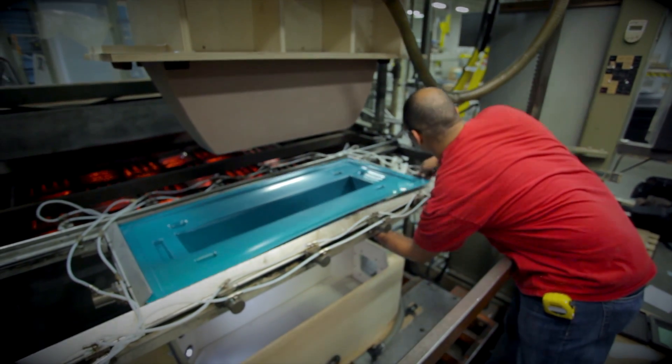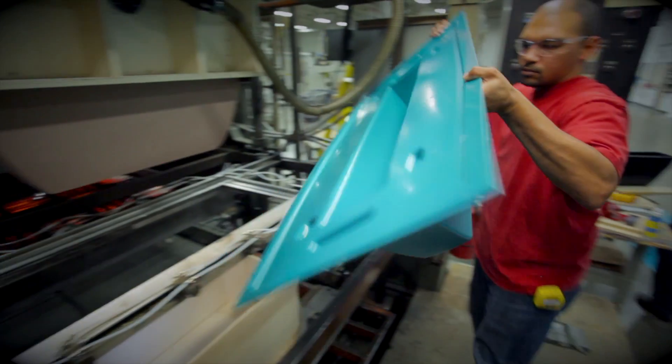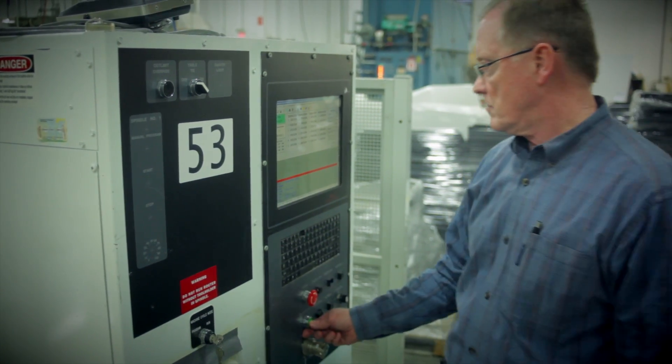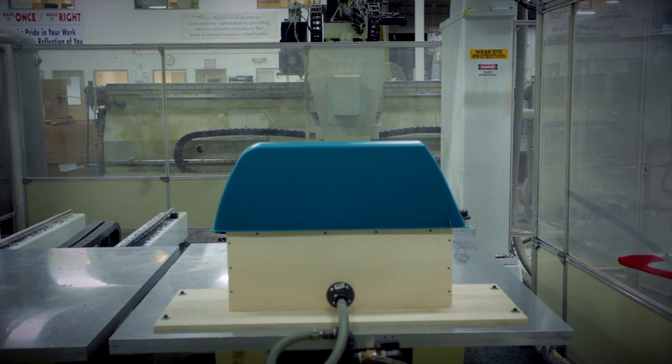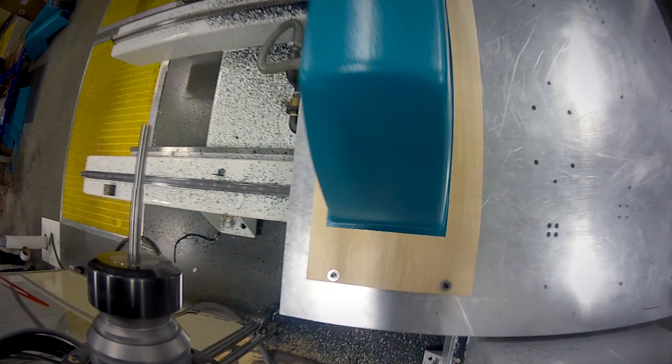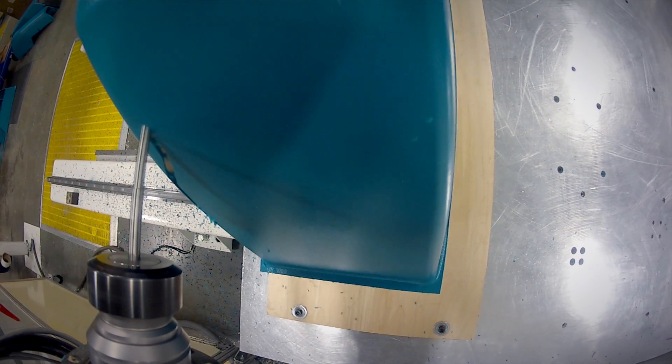We're not done yet because this part still needs to be trimmed according to the customer's design. Previously a trim fixture was CNC machined to be the holding fixture for final part trimming. The close fit of the fixture allows the part to be held by vacuum. Many companies take shortcuts and use hand trim fixtures.